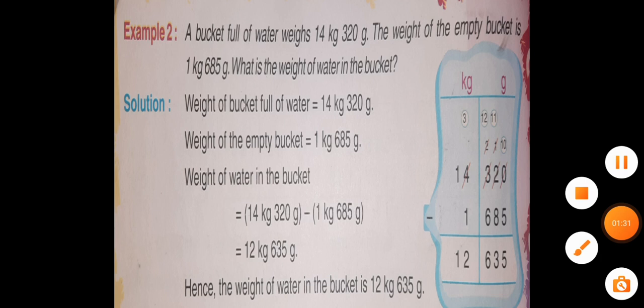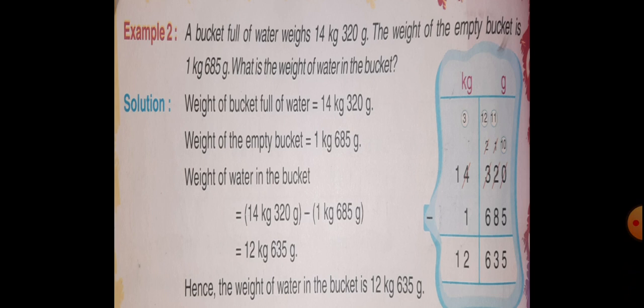Now, Example 2. A bucket full of water weighs 14 kg 320 g. The weight of empty bucket is 1 kg 685 g. What is the weight of water in the bucket?